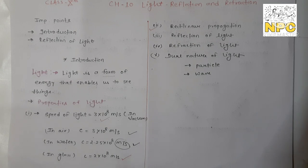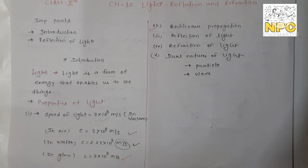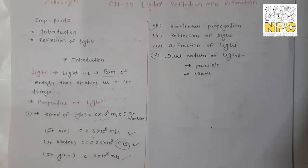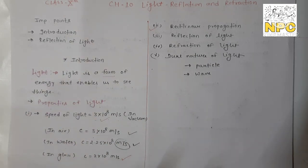The second property is rectilinear propagation, which means light travels in a straight line. The third and fourth properties — reflection and refraction of light — will be covered in this chapter. The fifth property is the dual nature of light: light behaves both as a particle and as a wave. This dual nature of light is important in our study.